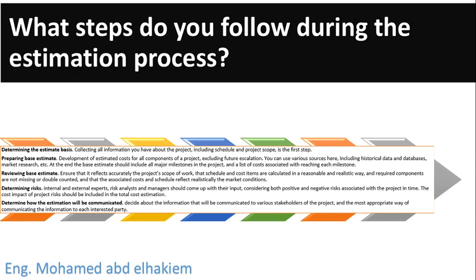Third, reviewing the base estimate: ensuring it accurately reflects the project's scope of work, that schedule and cost items are calculated in a reasonable and realistic way, required components are not missing or double-counted, and that associated costs and schedule realistically reflect market conditions. Fourth, determining risks: internal and external experts, risk analysts, and managers should provide input, considering both positive and negative risks. The cost impact of project risk should be included in the total cost estimation. Fifth, determine how the estimation will be communicated to various stakeholders and the most appropriate way of communicating the information to each interested party.